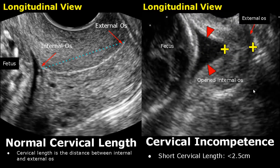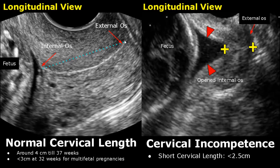Cervical length is the distance between the internal and external os. It is measured by placing one caliper on the internal os and the other caliper on the external os. The normal cervical length is around 4 cm until 37 weeks, and less than 3 cm at 32 weeks for twin pregnancies. A short cervix is suggestive of cervical incompetence, with a cervical length less than 2.5 cm.